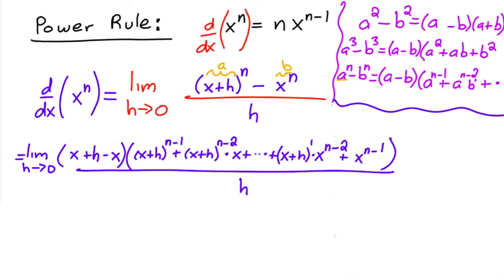And all of this is over h. Now something really interesting happens. These x's subtract and so you just have h right here multiplying this entire parentheses. Well, these two can be divided, h and h can be divided to leave you with one.